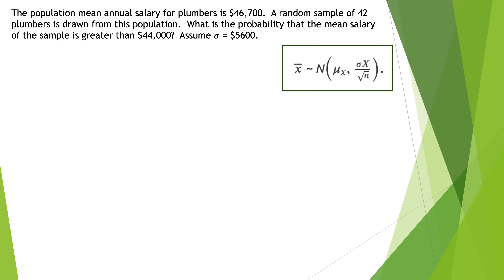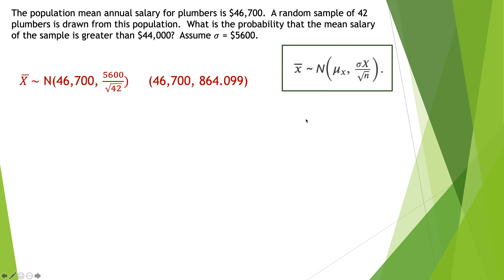The first thing I always like to do is write out the normal distribution for the sample means. I can tell it's that because of the x-bar in the front instead of just an x. Tilde normal, then mu of x which is the average of the x's, but this has standard deviation over the square root of n — that's what tells us we're talking about the Central Limit Theorem. Then I plug in the particular values.